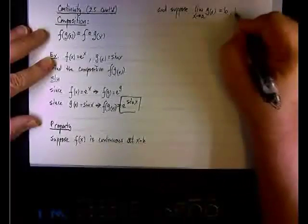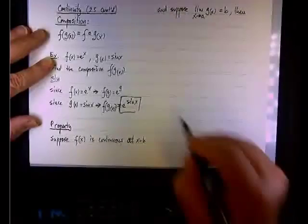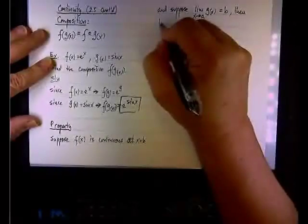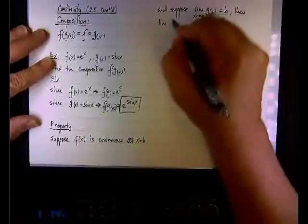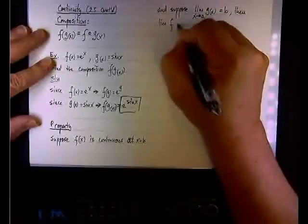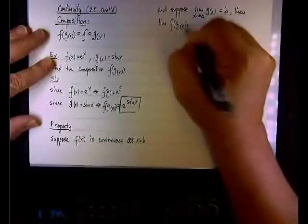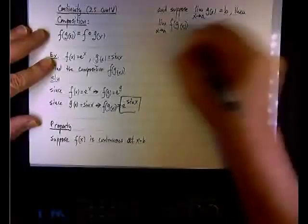Put these two suppositions together and you end up having the limit of f(g(x)), the composition, as x approaches a, equals...